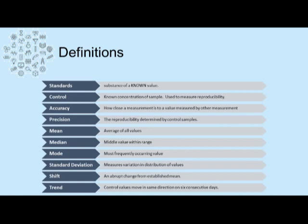Standard deviation measures the variation and distribution of values. A shift is an abrupt change from an established mean. A trend is when control values move in the same direction for six or more days.